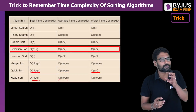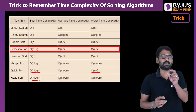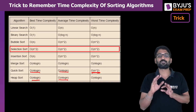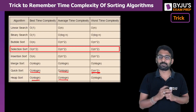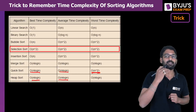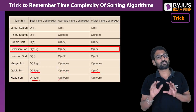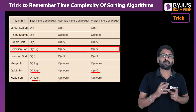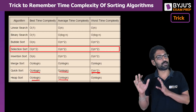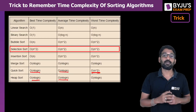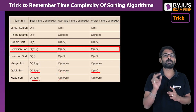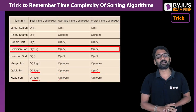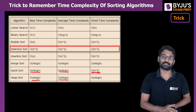It is very easy if you remember it this way: merge sort and heap sort — same time complexity; insertion sort and bubble sort — same time complexity; selection sort — n² in all cases; quick sort — n² in the worst case, n log n in the other cases.